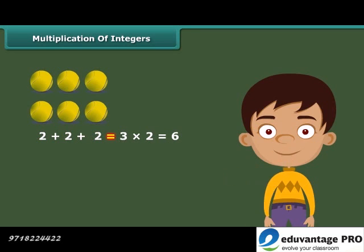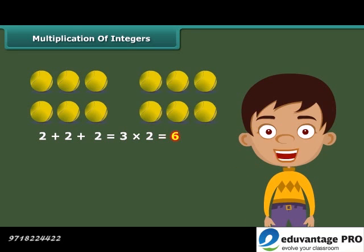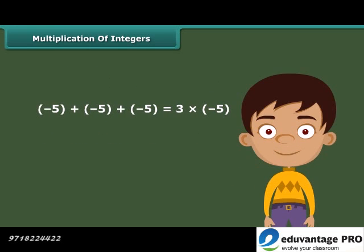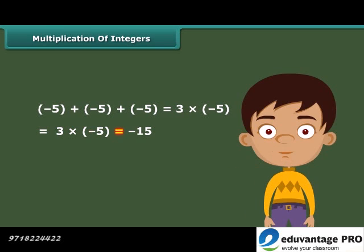2 is equal to 3 into 2, which equals 6. Similarly, multiplication of integers is also repeated addition. For example, minus 5 plus minus 5 plus minus 5 is equal to 3 into minus 5. Therefore, 3 into minus 5 is equal to minus 15.